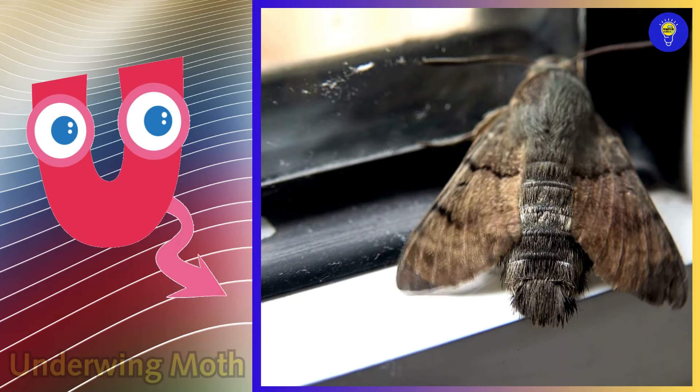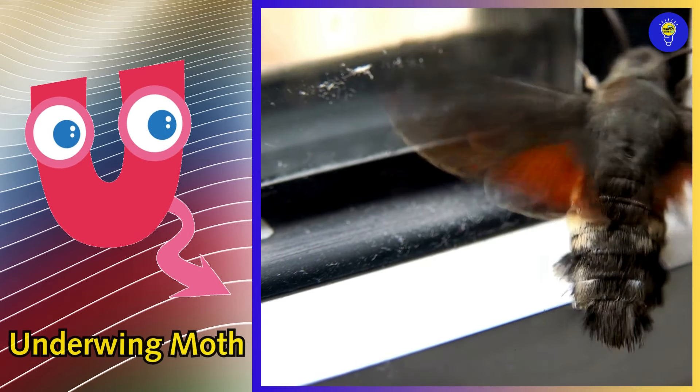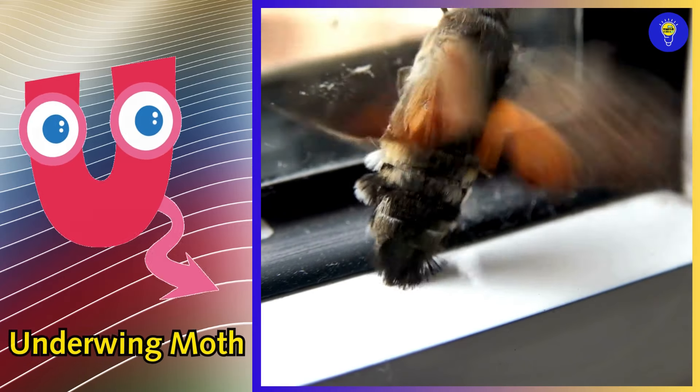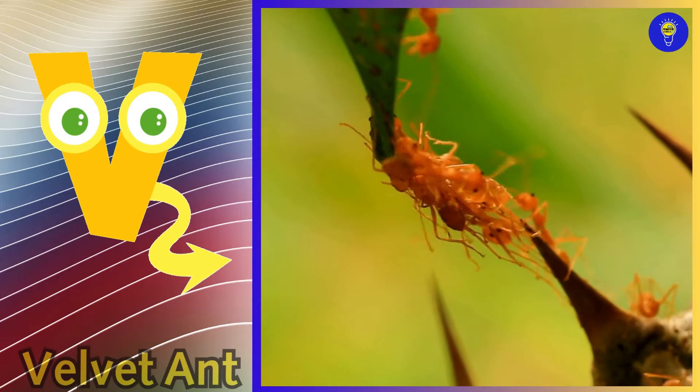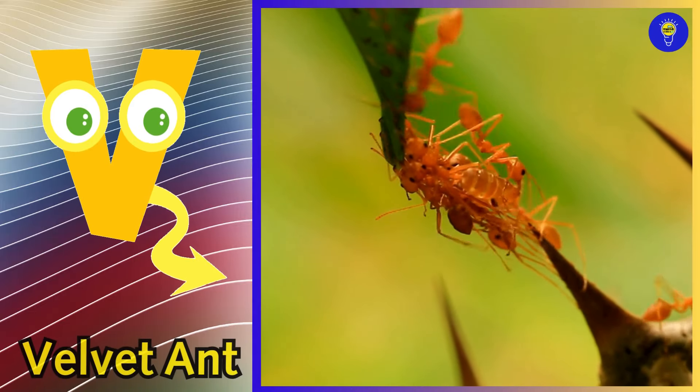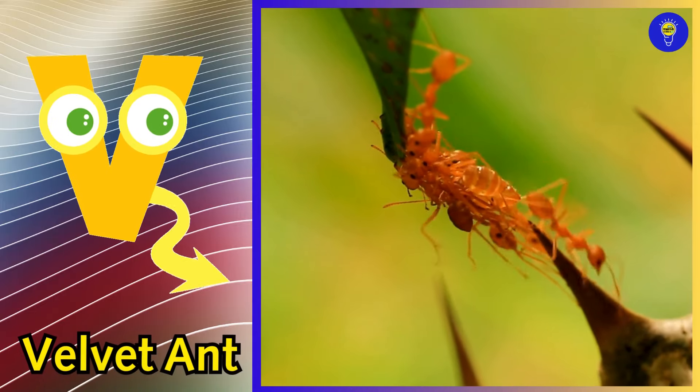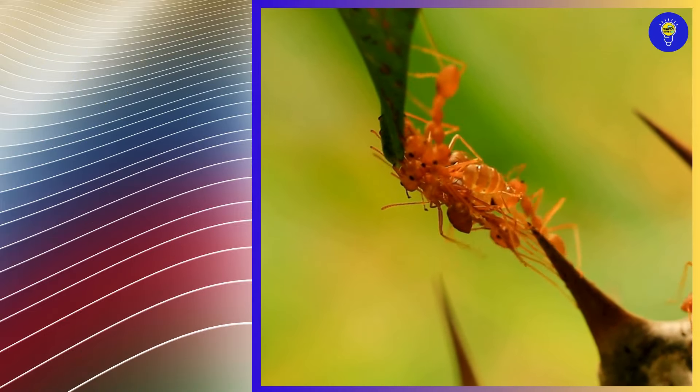U is for Underwing Moth, u, u, Underwing Moth. V is for velvet ant, v, v, velvet ant.